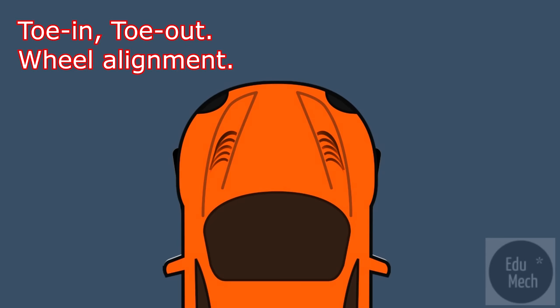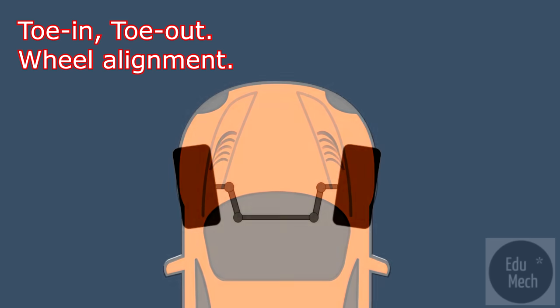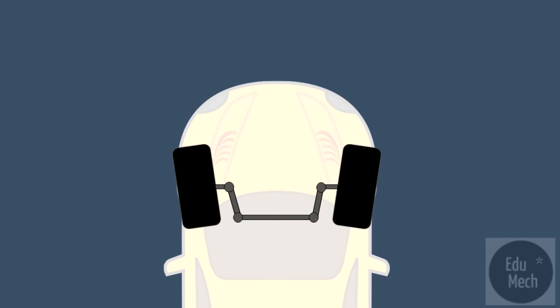This video looks at wheel alignment and what toe-in and toe-out are. When looking from the top of the vehicle, the wheel alignment, often called tracking, is the relationship between the angles of the steered wheels while at rest.